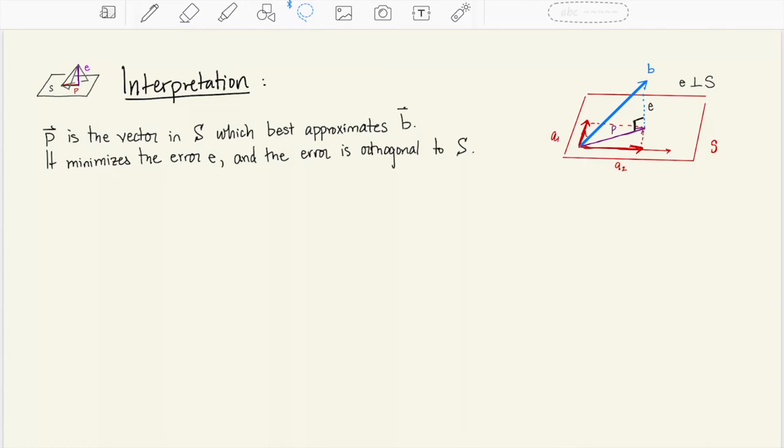So here we have our interpretation of the projection vector p. p lives in the subspace S and it best approximates the vector b. p is the vector which minimizes the error e. The error e is realized by the vector that goes straight down from the tip of b into the subspace S. This error is orthogonal to the subspace S. Thus p we write as the linear combination x1 a1 through xn an where the xi hats are the scalars.